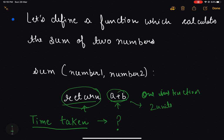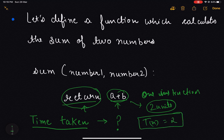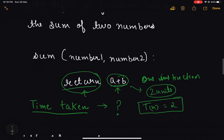As per our model machine, arithmetic statements take one unit of time and return statements also take one unit of time, so in total this whole instruction will take two units of time. Irrespective of the input, this function will always complete in two units of time, so T(n) will always be equal to two — a constant function.